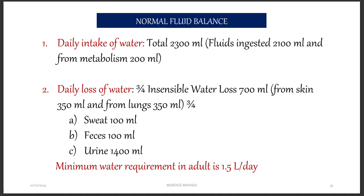For daily water loss, about 700 mLs of water is lost insensibly: 350 mLs through the skin and 350 mLs in other ways. In sweat, we lose 100 mLs; in feces, 100 mLs; and urine accounts for the majority — about 1.4 liters. So the minimum water requirement, in and out, is 1.5 liters per day. That is the minimum water the body needs, but the total amount you should ingest is about 2.3 liters.